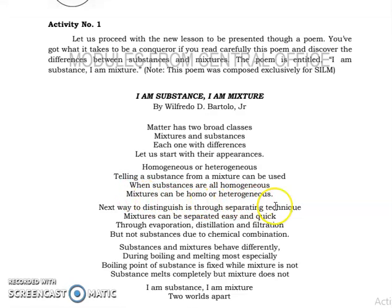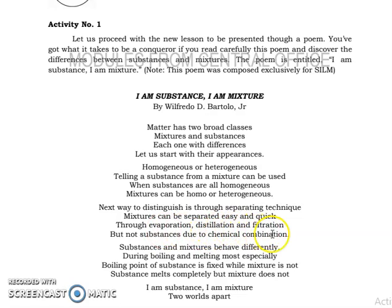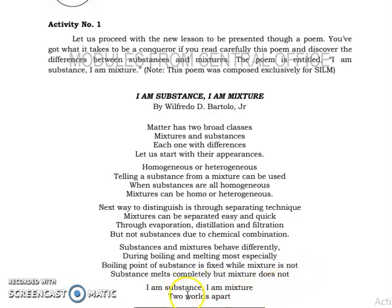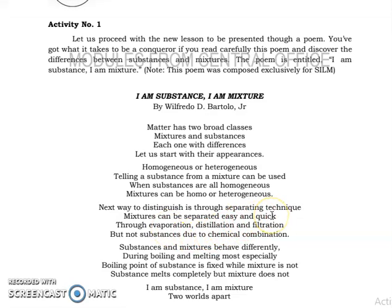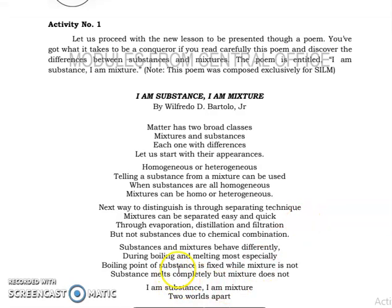Mixtures can be homogeneous or heterogeneous. The next way to distinguish is through separating techniques — mixtures can be separated through evaporation, distillation, and filtration, but not substances due to chemical combination. The boiling point of a substance is fixed while a mixture's is not. A substance melts completely, but a mixture does not. Take note: substances are all homogeneous and have a fixed boiling and melting point, whereas mixtures have varying melting and boiling temperatures.